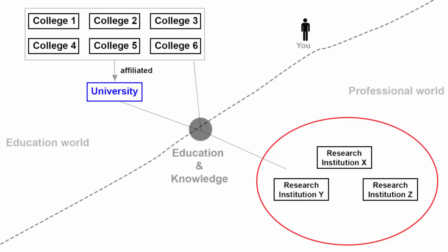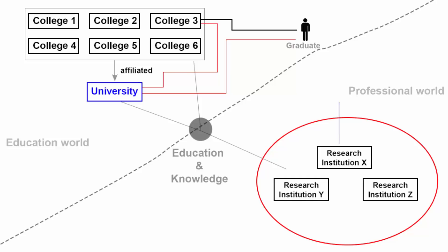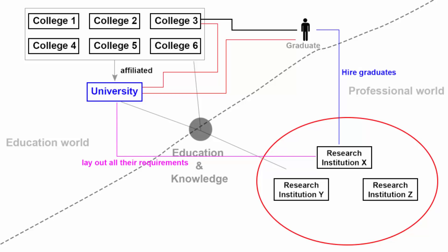For example, if you are studying in a particular college, wouldn't it be nice if your college informed you about certain opportunities in academics and research being conducted at the university level? Similarly, once you are done with college, research institutions can make use of fresh graduates. If those institutions lay out all their requirements to the city's colleges and universities, that can help design curriculum and pedagogy that complements what is happening in the real world.